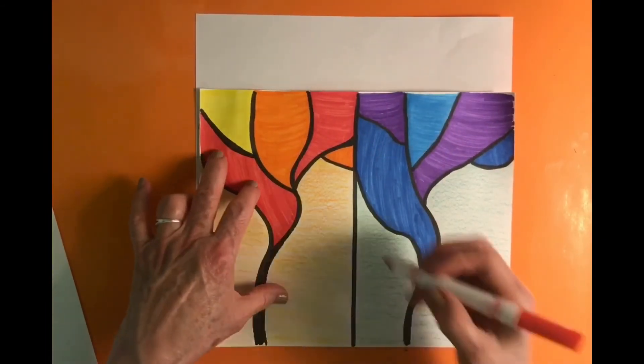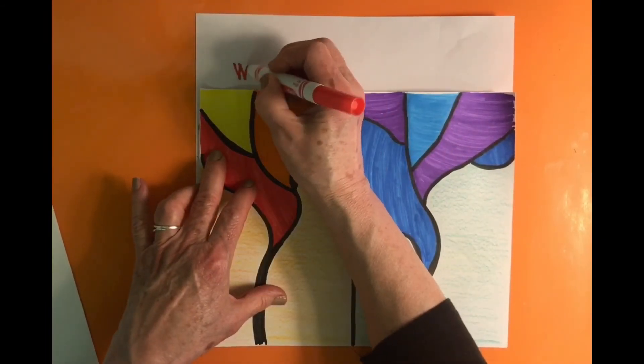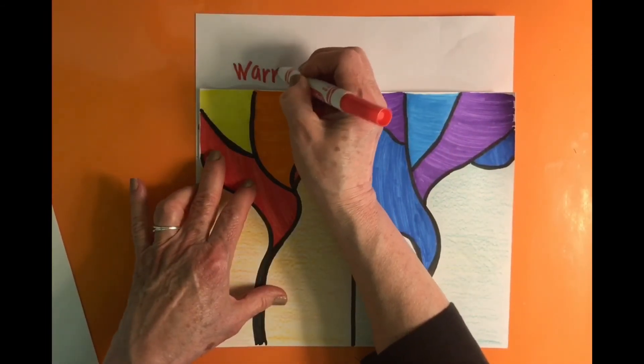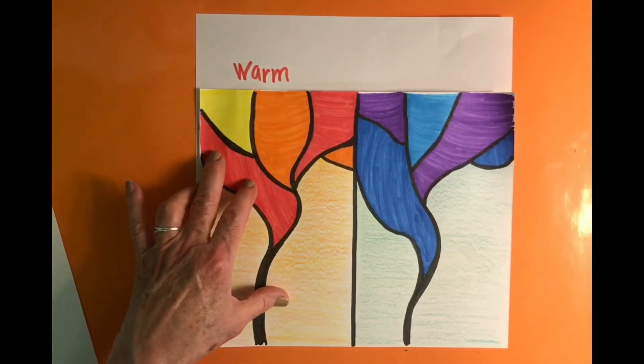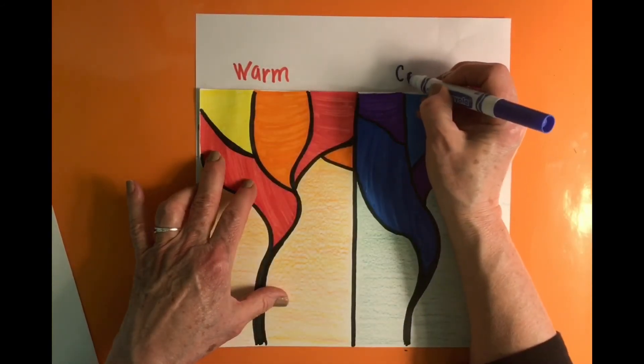So now we have a side that is using warm colors, and we have a side that is using cool colors.